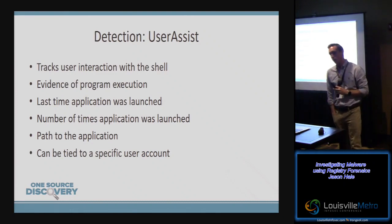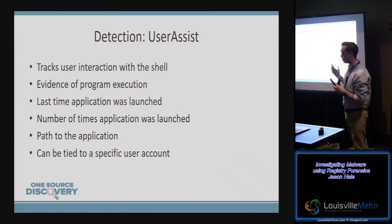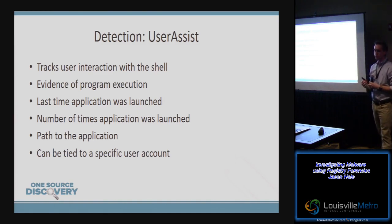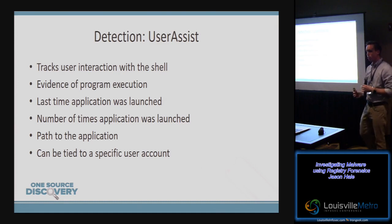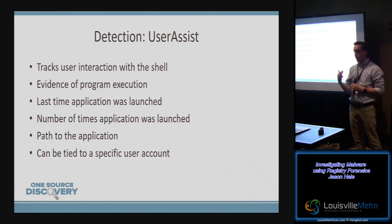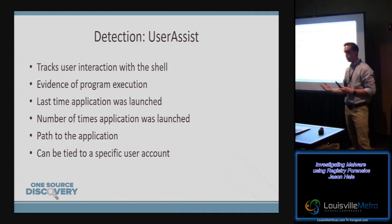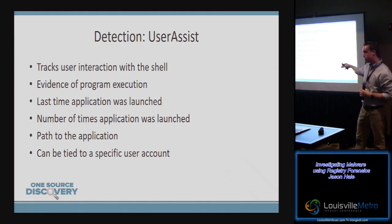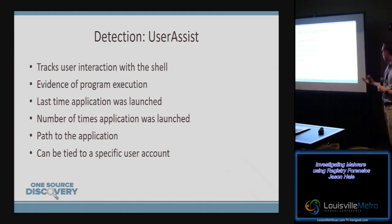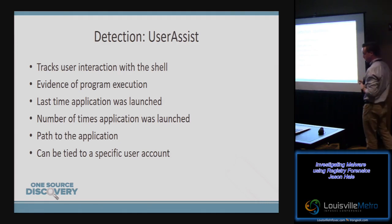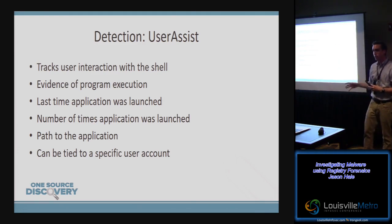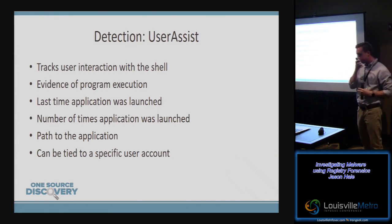UserAssist is another location commonly looked at for program execution. This differs from some of the others in that it requires interaction with the shell — it's not going to catch users running commands from the command prompt. However, if there is shell interaction, you'll find pretty valuable information: programs that were launched, the last time programs were launched, and the context of the launch. Because these are in an NTUser registry hive, you can tie that to a specific user account — so we know this user ran this particular application and here's the last time they ran it.